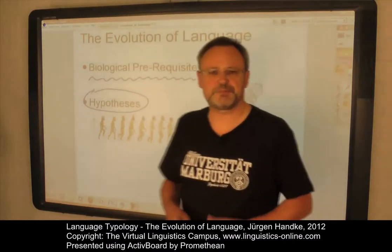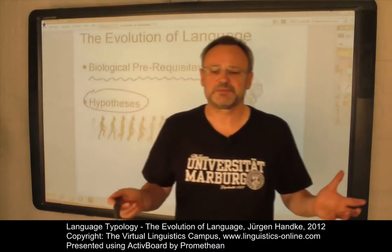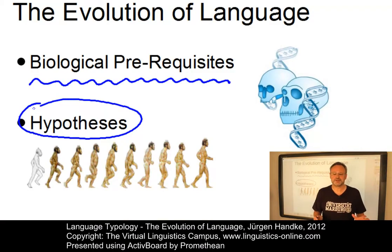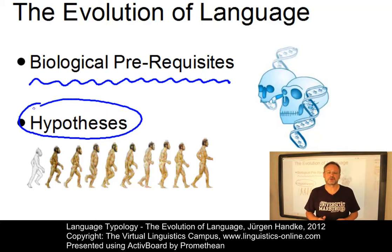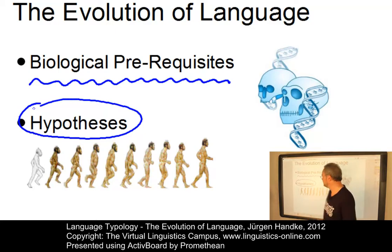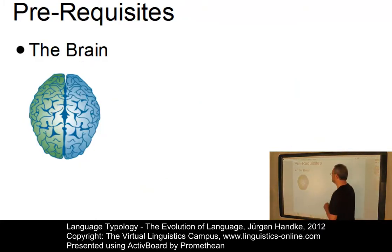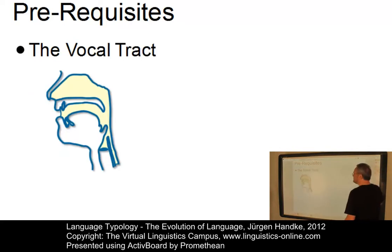The evolution of human language is closely connected with changes in two organs essential for the use of language: the structure and the size of the human brain, and the shape of the vocal tract.